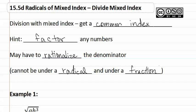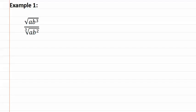Let's look at example one. We'll start by getting a common index so that we can combine these together using the quotient rule. Remember, when there is no number written, it is the square root.